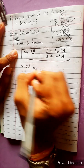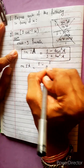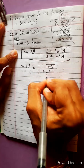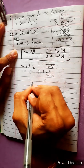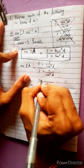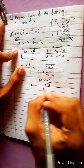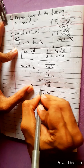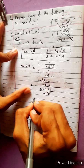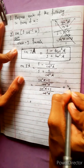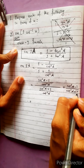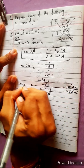Cos 2a equals 1 minus cos squared a divided by 1 by cos squared a, divided by 1 plus 1 by cos squared a. Taking LCM as cos squared a, the numerator becomes cos squared a minus 1 and denominator becomes cos squared a plus 1. After cancellation, what remains is cot squared a minus 1 divided by cot squared a plus 1. This is the formula for cos 2a.